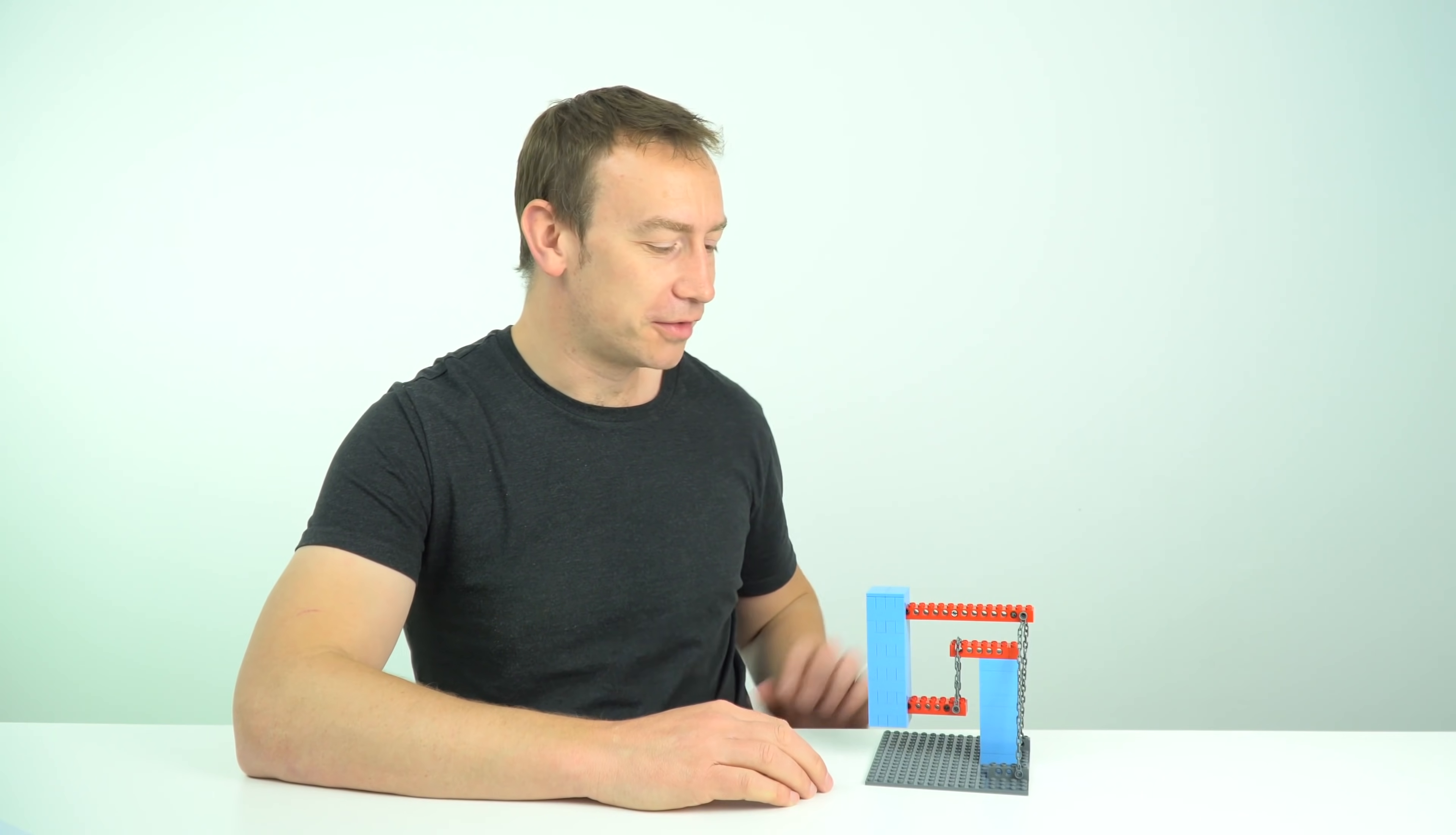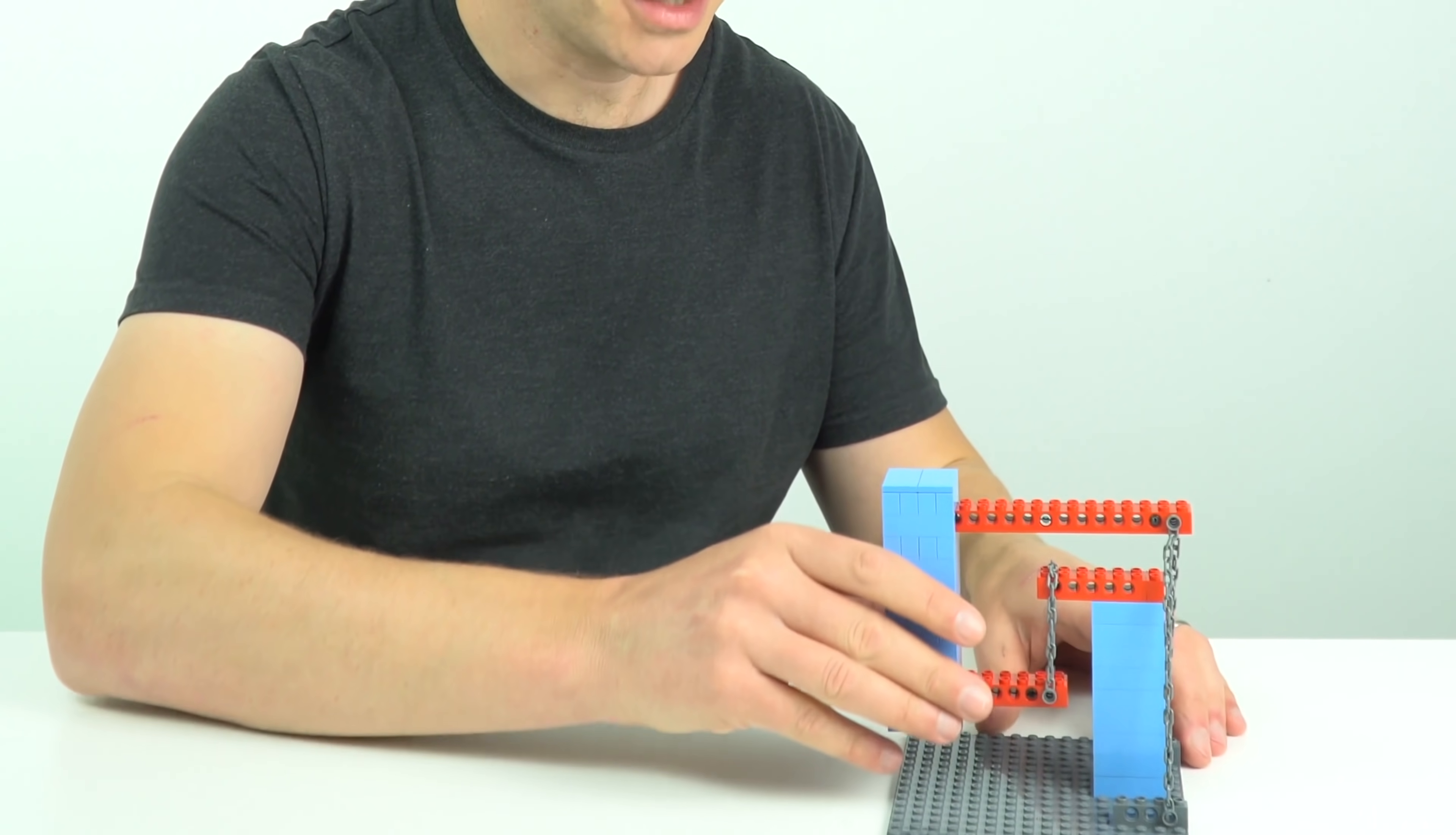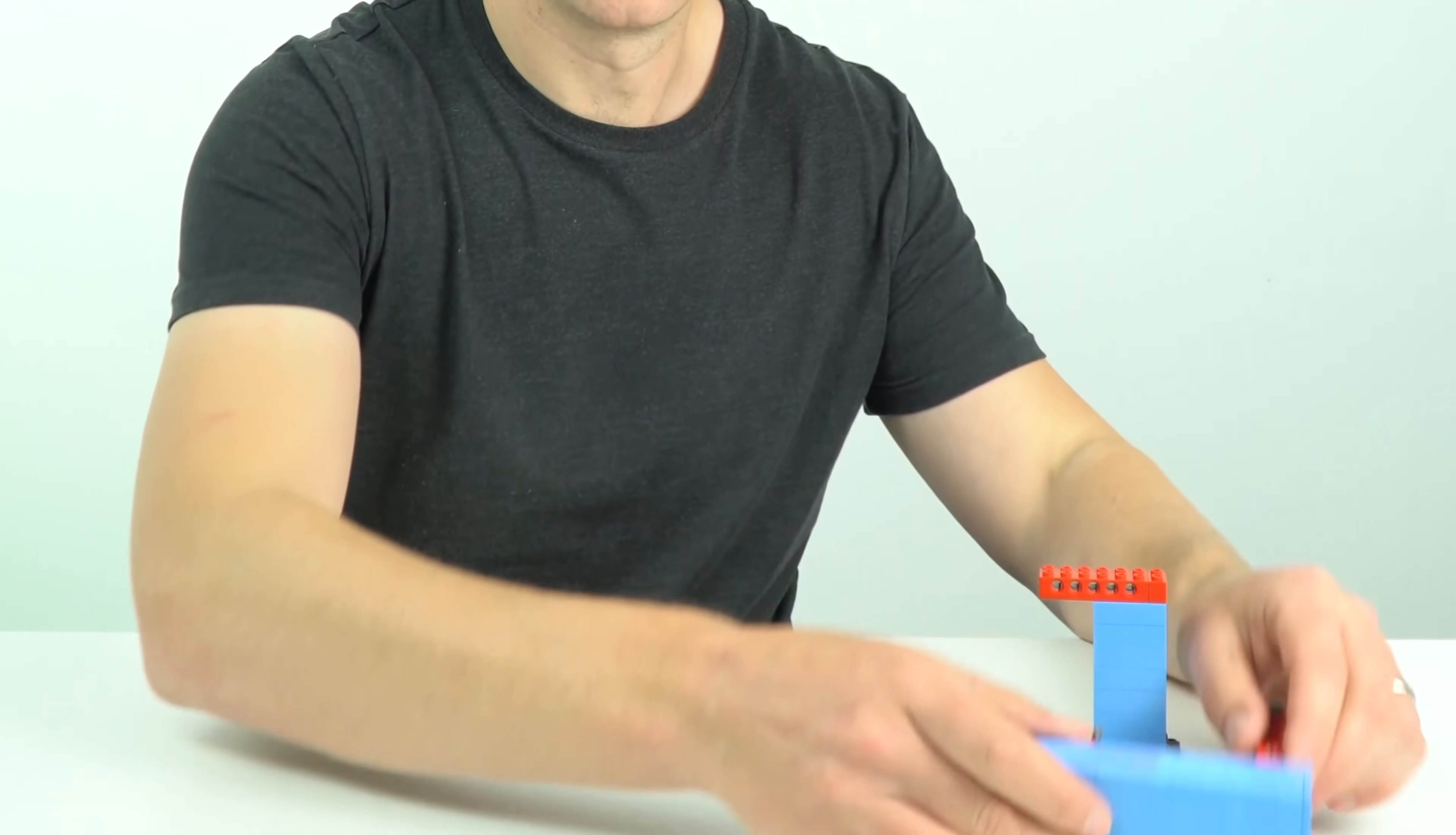But what I'd like to do now is explain the Lego using physics because this structure uses tension to hold it up. The word tensegrity was coined by Buckminster Fuller, a scientist in the 60s who looked at how tension can be used for the integrity of structures.